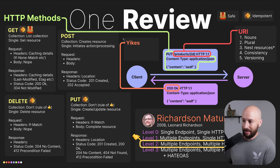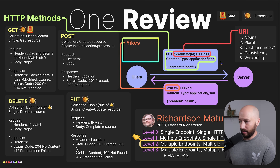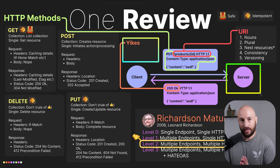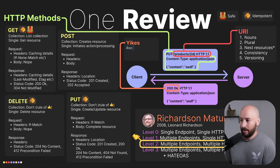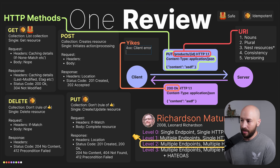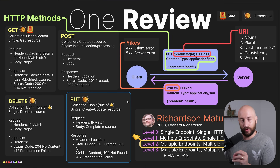Last and definitely not least, we have error handling. When things go sideways — and they will — you want to return the appropriate HTTP status code. Going over every error status code is out of scope for this video, but simply put: anything from the 400 family is a client error, meaning something about the request is invalid. Everything from the 500 family is a server error, meaning something went wrong on the server side. Now you can take a screenshot and save this for later.